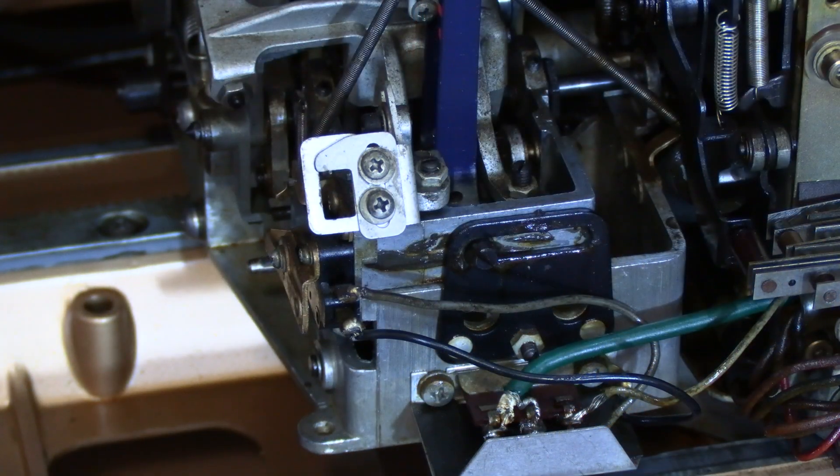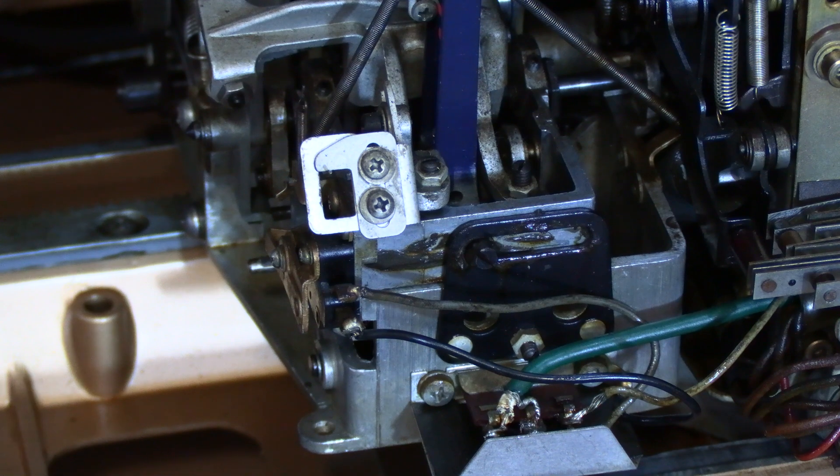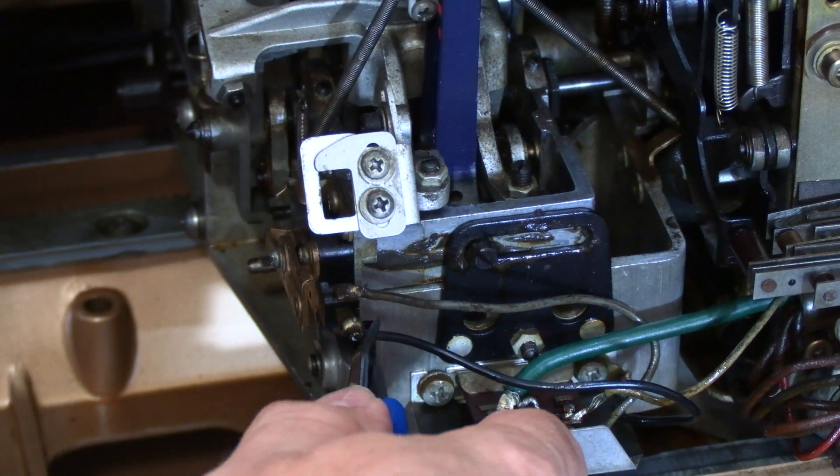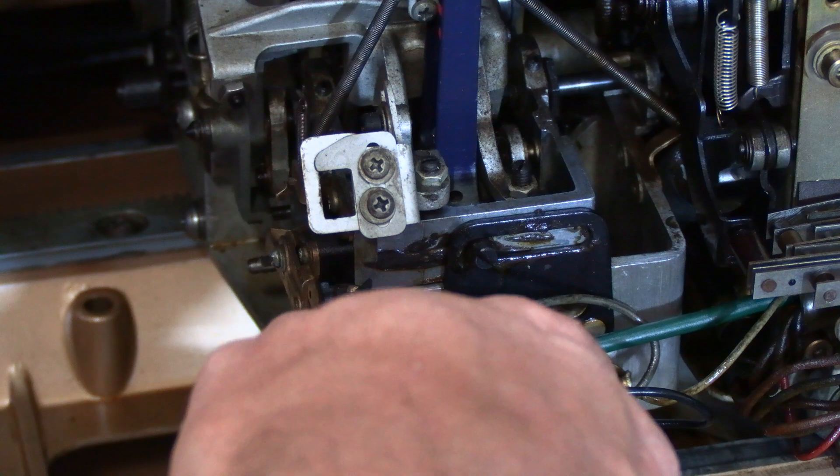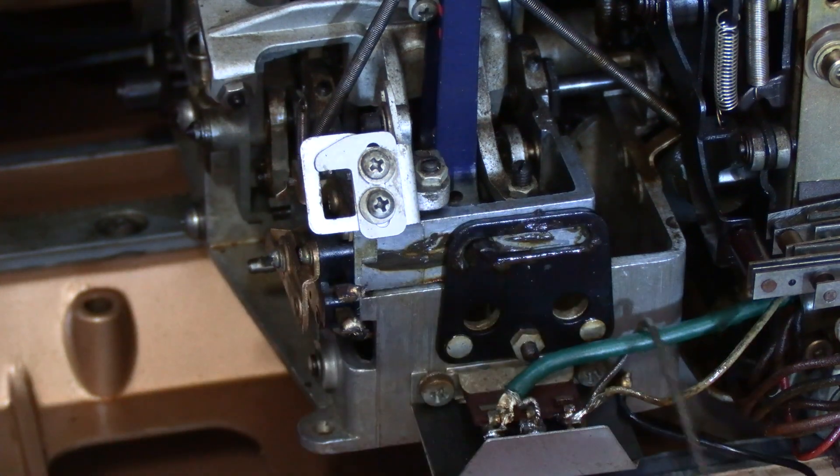So let's go ahead and go through the process to install the new electronic trip switch. We'll start by simply clipping the wires off of the old mechanical micro switch. Put those aside.